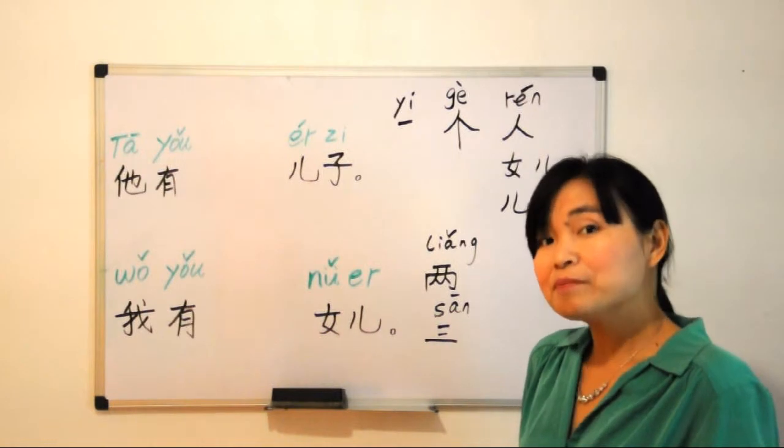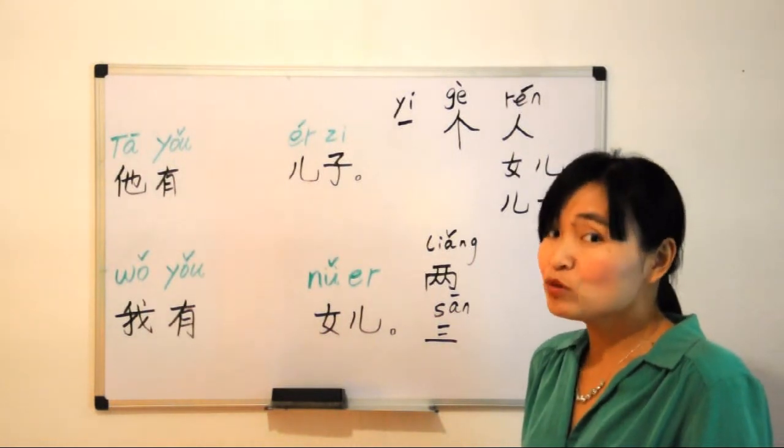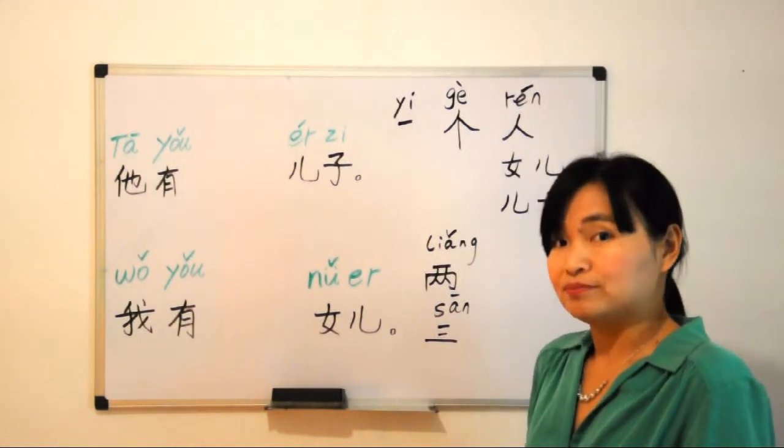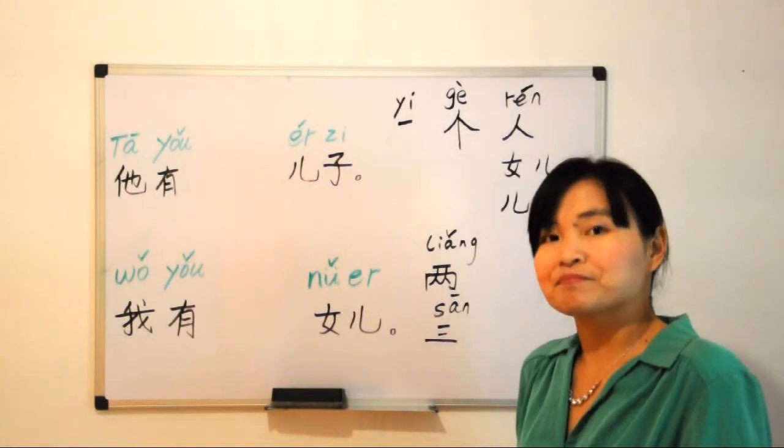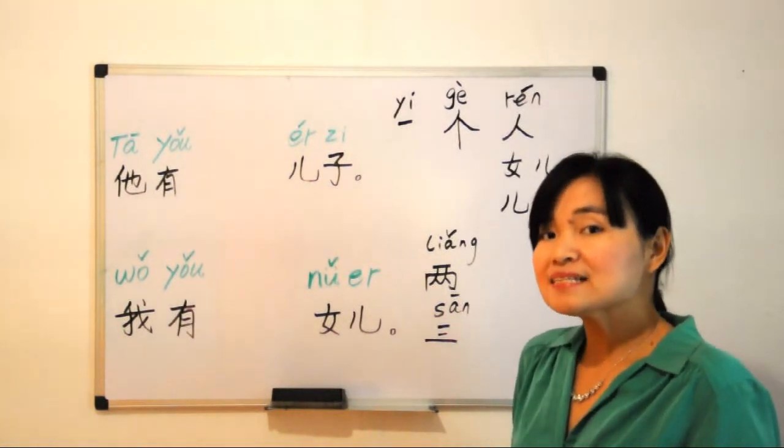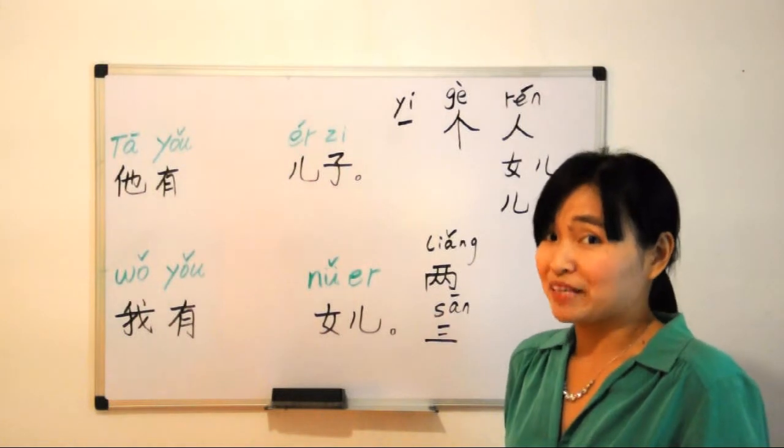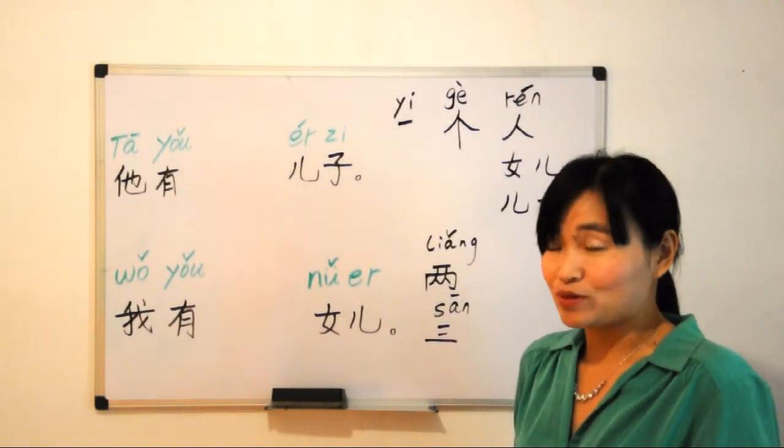So the other numbers will be the same as before, only two is a little different. So we combine lesson seven with today's class, and we can make more sentences in Chinese, right?